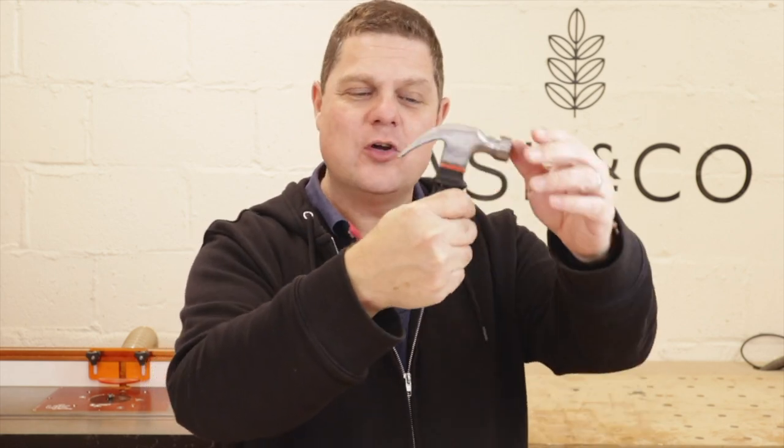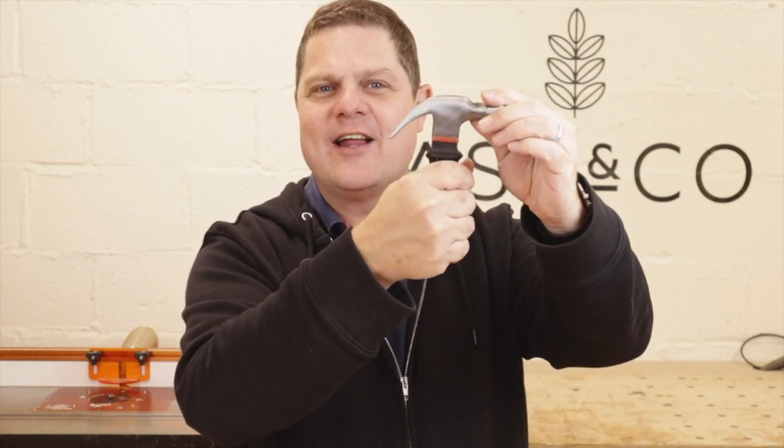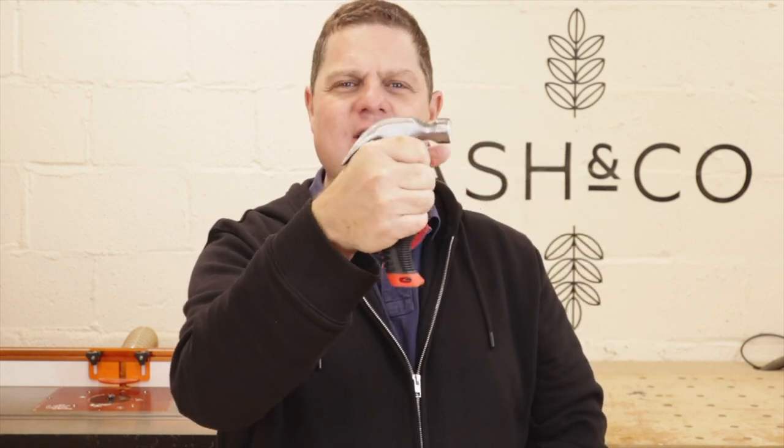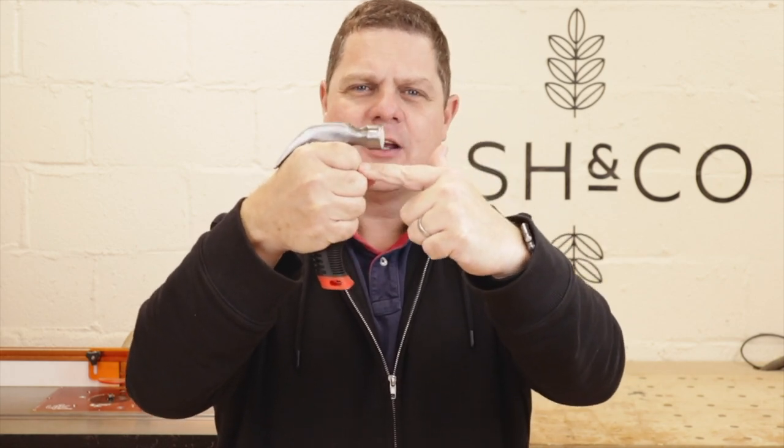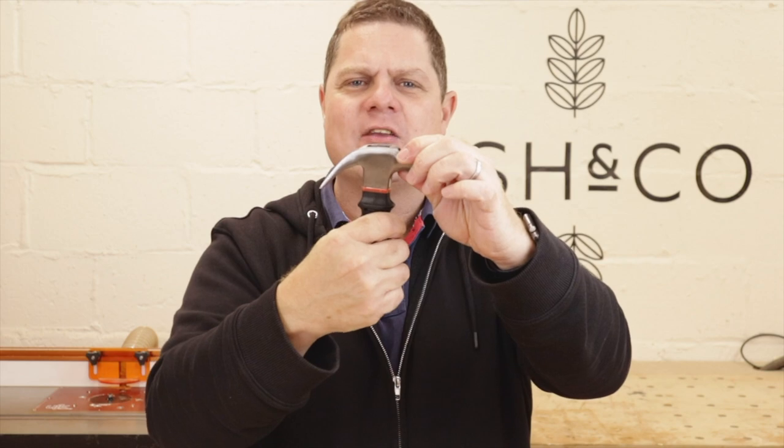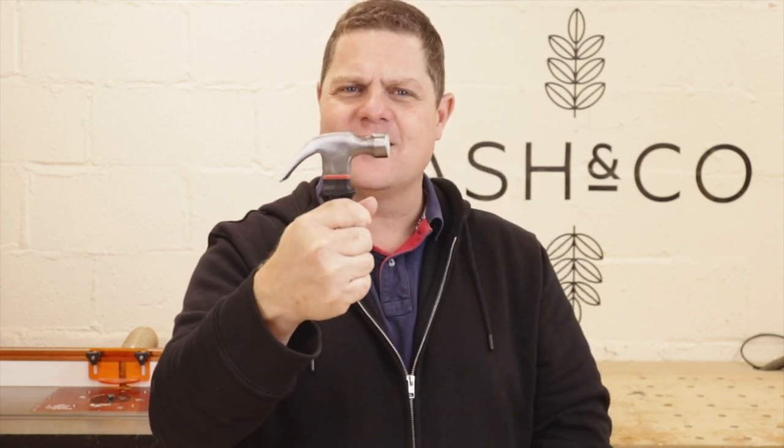Next, you should make sure that you're holding it at the bottom of the handle, not near the top like this. This is called strangling the hammer and it's quite dangerous because if you miss the nail, guess where the nail goes? Right onto your finger. So whenever you pick up a hammer, always hold it at the bottom like this.